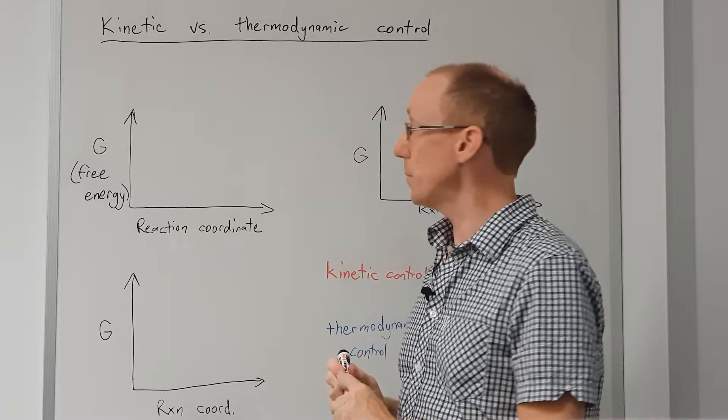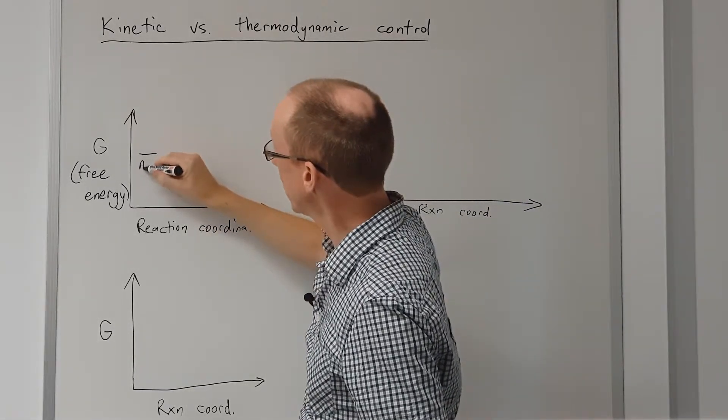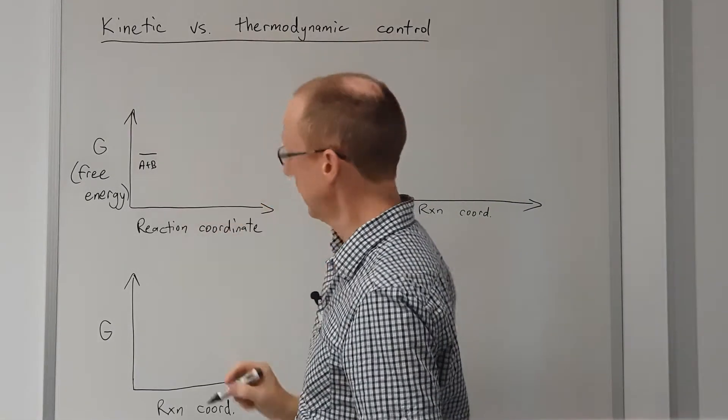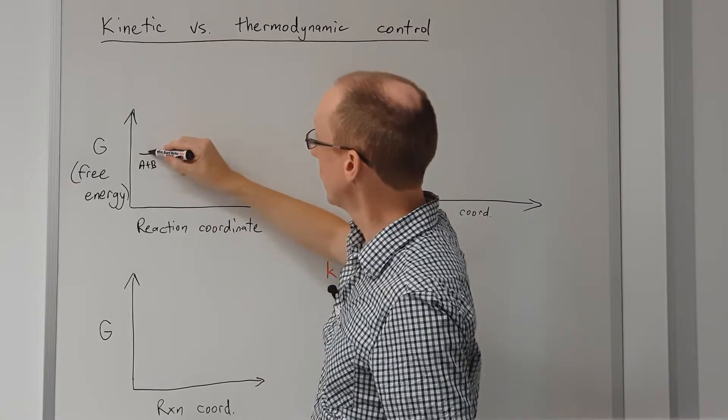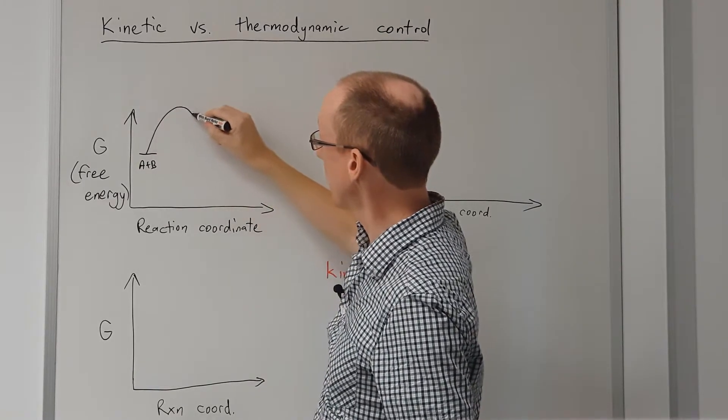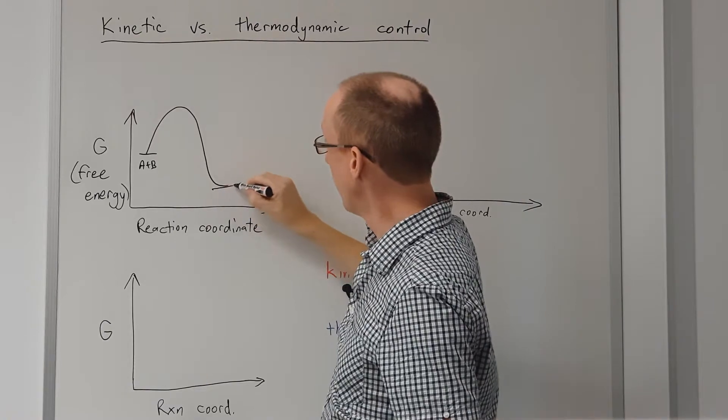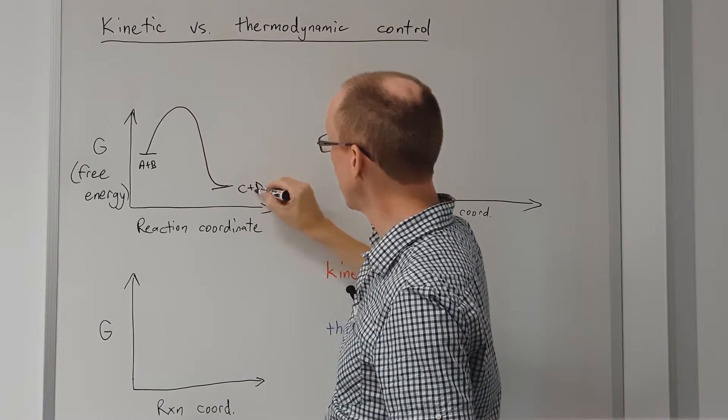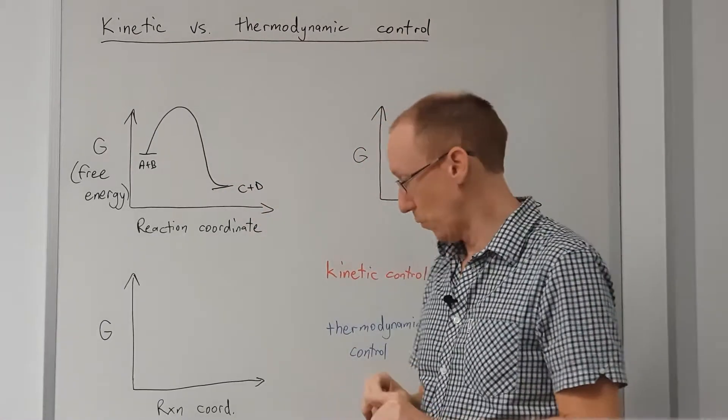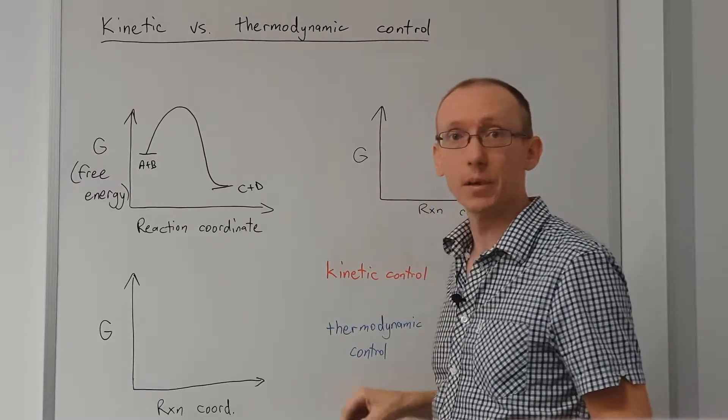So for a typical reaction we have reactants here, A plus B, and then they'll react together through some kind of transition state and form products, let's call them C plus D. And when we look at this, there's a couple of important parameters.